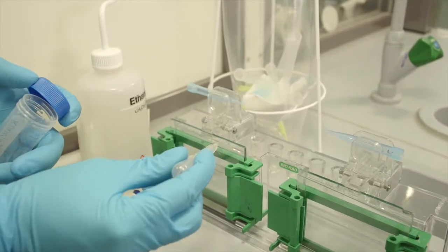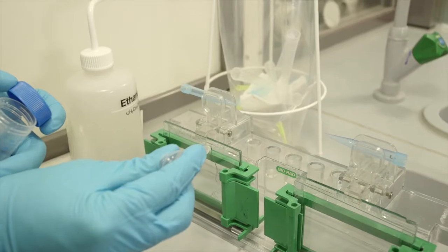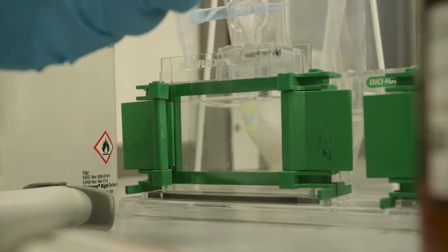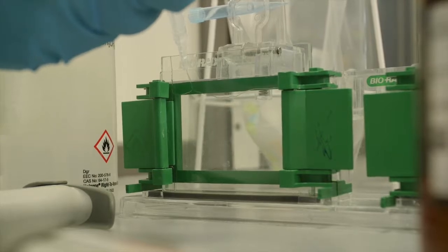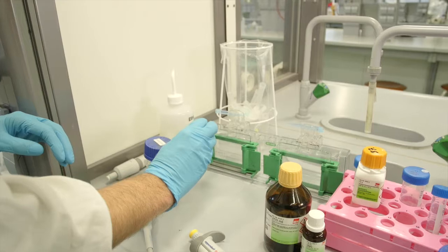Pipette the running gel solution between the glass plates to about 10 to 15 millimeters under the shortest glass plate. Try to avoid air bubbles. Add a few drops of isopropanol, as this makes the gel set in a straight line. Then leave the gel to polymerize.